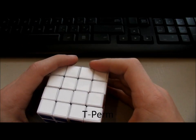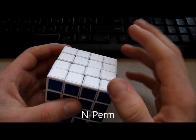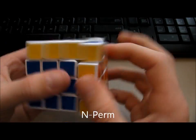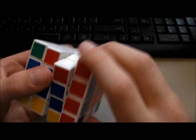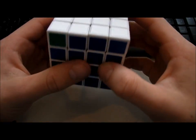And the other algorithm you need to know is the N-perm, the one that swaps these diagonals. So, like this.